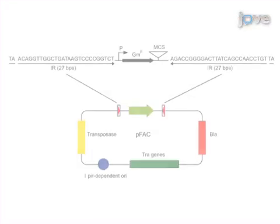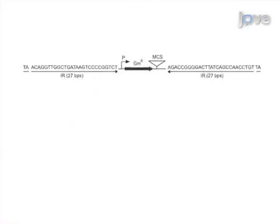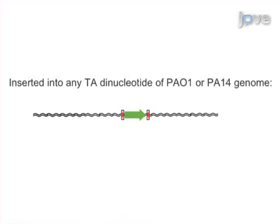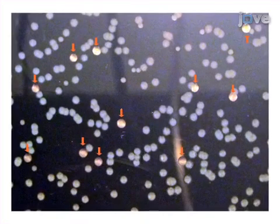Next, the PFAC plasmid is conjugated by co-culturing E. coli lambda pir with Pseudomonas aeruginosa PAO1, and transconjugates are selected on Pseudomonas isolation agar. Then mucoid colonies are identified and isolated on PIA plates.